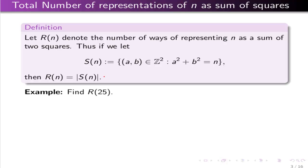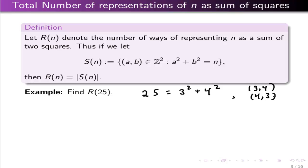For instance, if I want to find R(25), I have to represent 25 as a sum of two squares. We can say it's 3² + 4² — our famous 3-4-5 triangle formula. That gives rise to how many ordered pairs? You could have (3,4), (4,3), and then you can put plus or minus signs on any one: ±3, ±4, or ±4, ±3. So there are really 8 representations associated with this one decomposition.